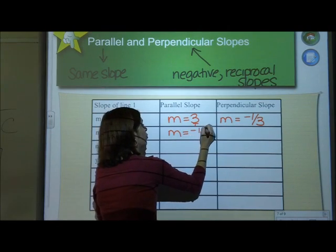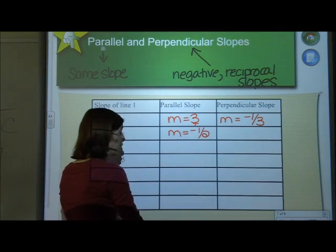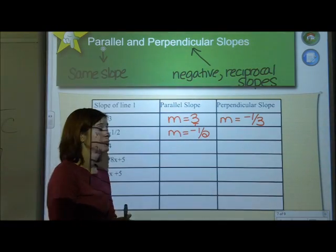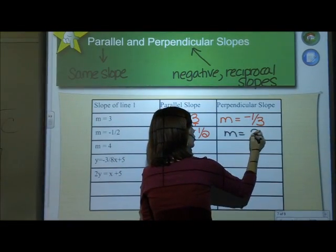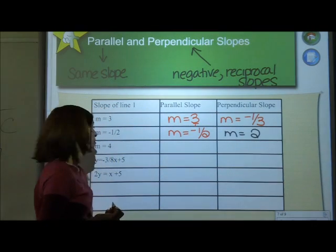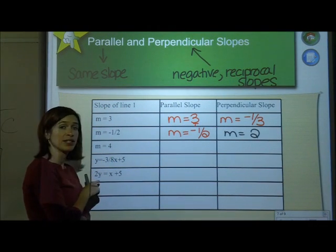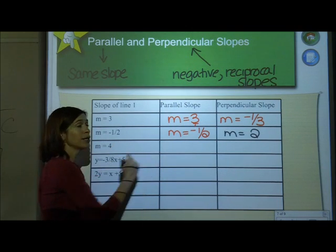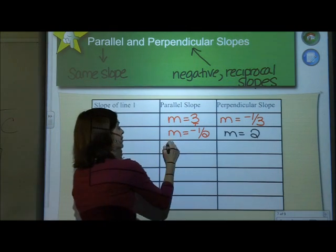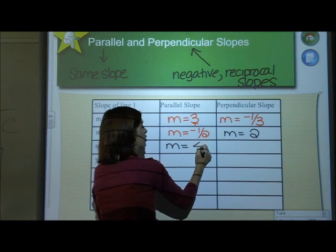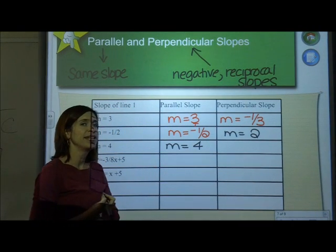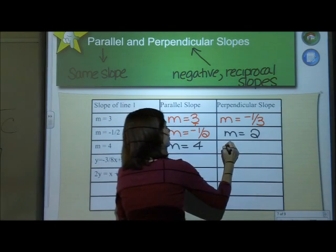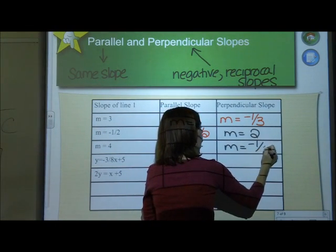That's right. Negative 1 half. All right, now what would the negative reciprocal slope to that be? Hoping you're saying M equals 2. All right? And then this is the last one, and we're going to go over the next two examples in class tomorrow. If M equals 4, if I want a parallel slope, it would be? That's right, you guessed it. Same slope, so M equals 4. If I want the negative reciprocal slope, what would it be? M equals negative 1 fourth.